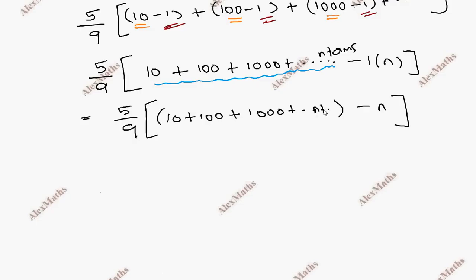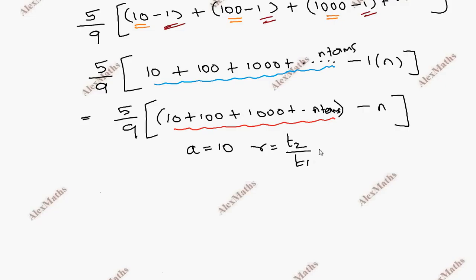Now in this GP term, we identify a and r. We have a equal to 10, and r equal to term 2 divided by term 1, which is 100 by 10, giving r equal to 10.